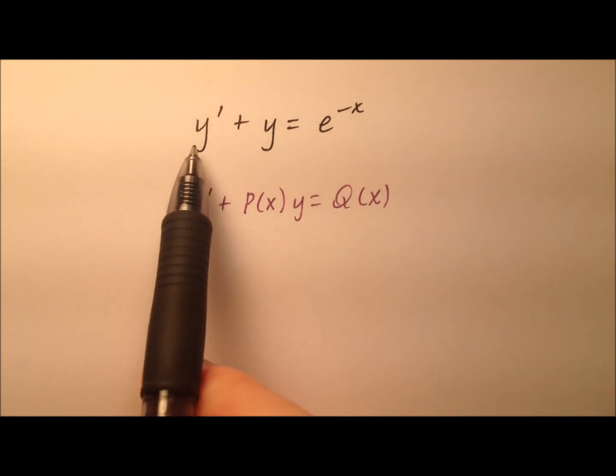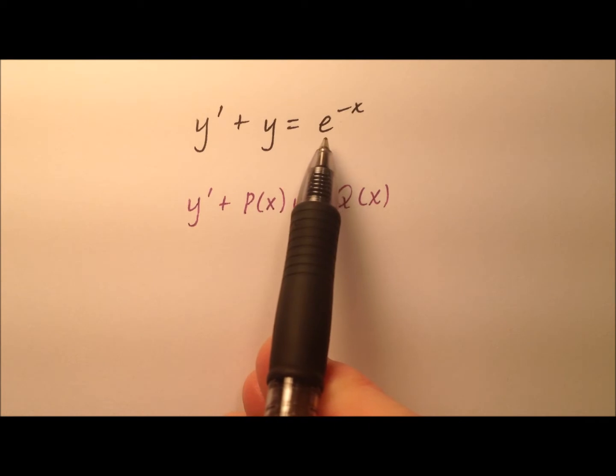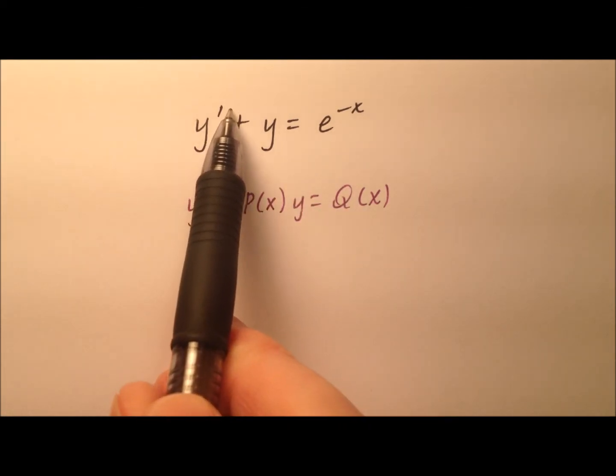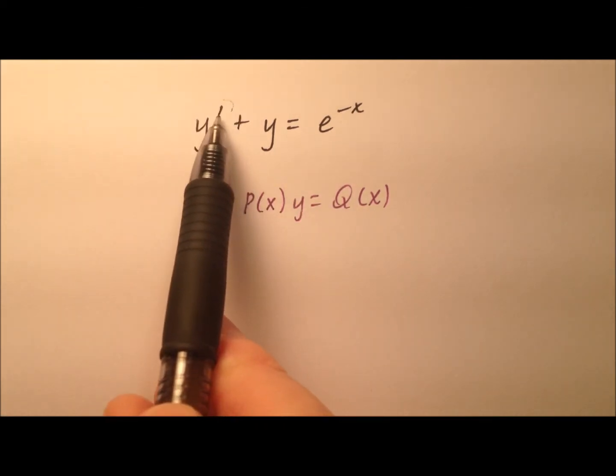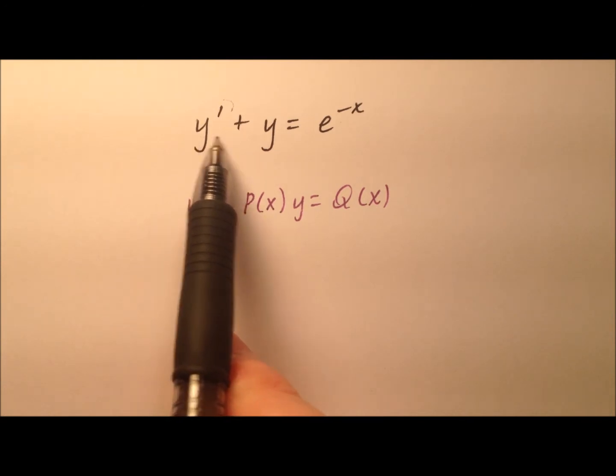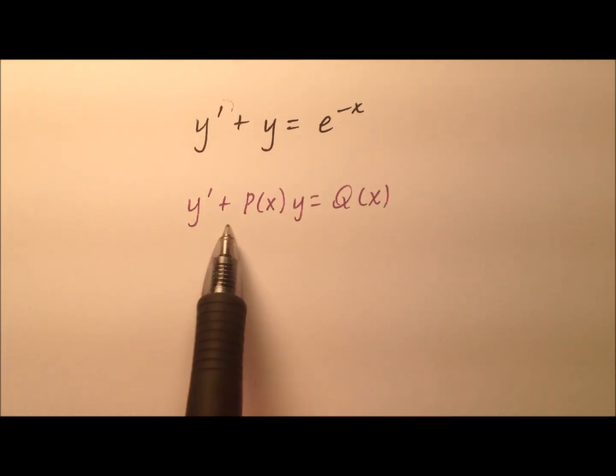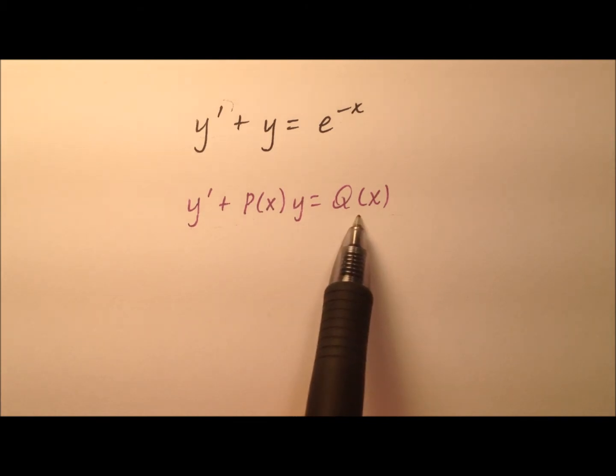In this example, we're going to look at solving this first-order linear differential equation. So as a recap, remember that it's first order because the highest derivative we see is the first derivative, and we say it's linear because it can be written in this form: y' + p(x)y = q(x), where p(x) and q(x) are functions in x.